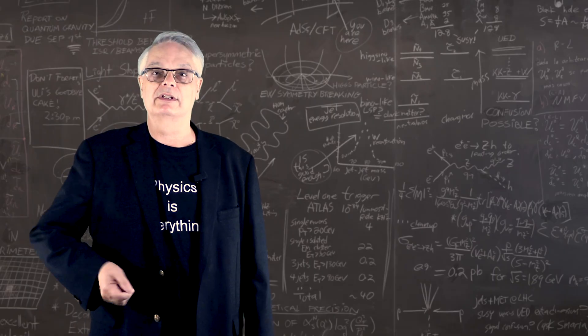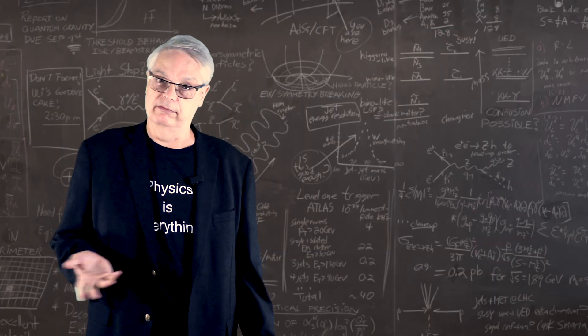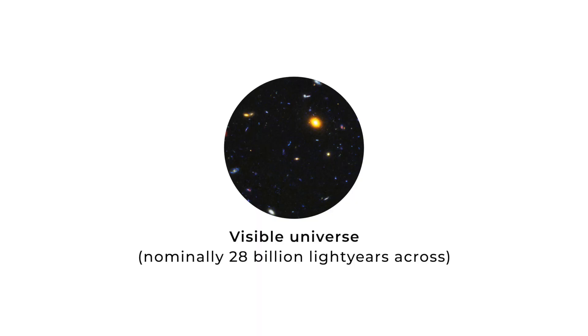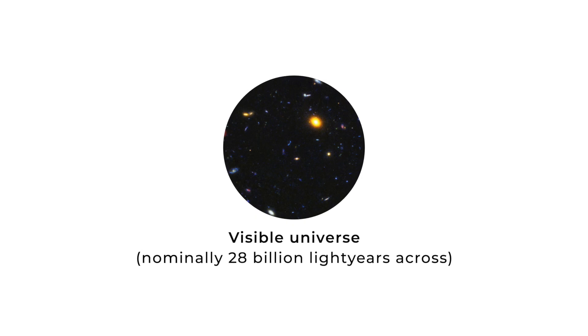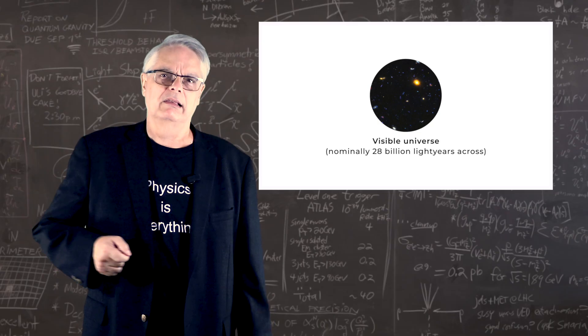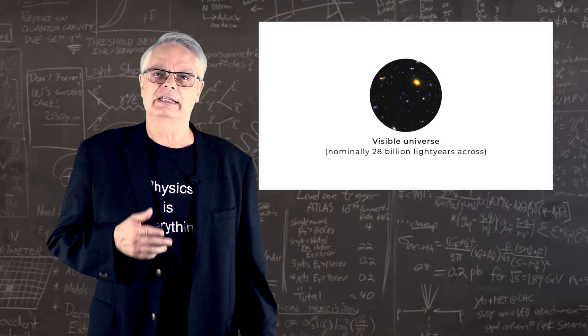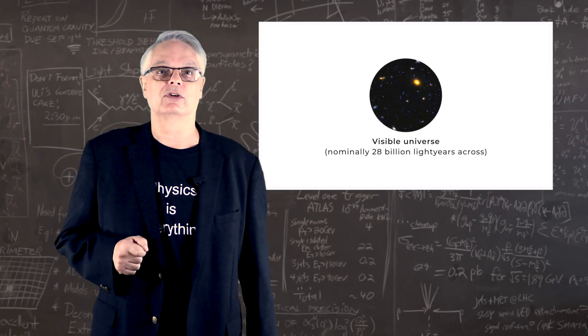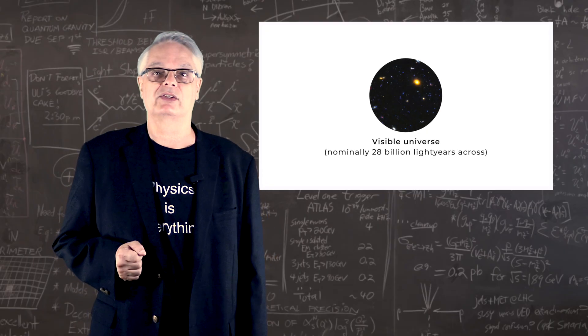First, we have to distinguish between the visible universe and the entire universe. The visible universe is basically just a sphere centered on the Earth. The radius of the sphere is determined by the speed of light and the age of the universe. Light travels at a fixed speed, so that speed times the age of the universe should tell us the radius of that sphere.